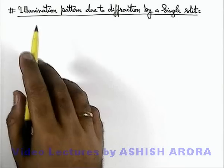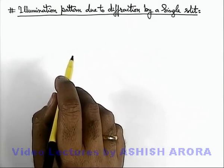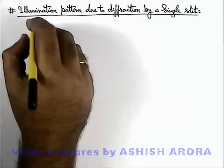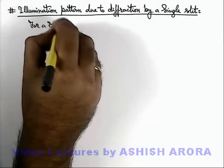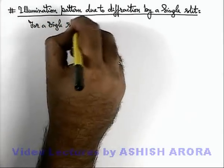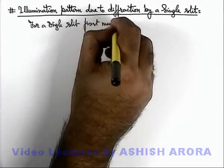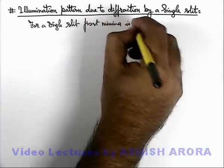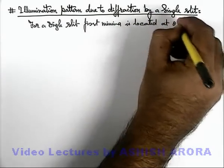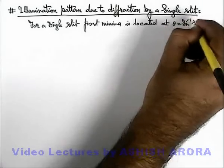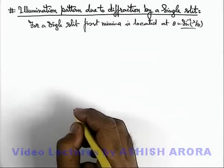Now let us discuss the illumination pattern due to diffraction by a single slit. Here we already discussed in previous sections that for a single slit, first minima is located at theta equals sine inverse of lambda by b. This is the angular width of central maxima.